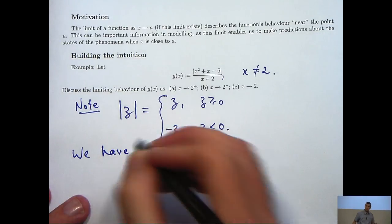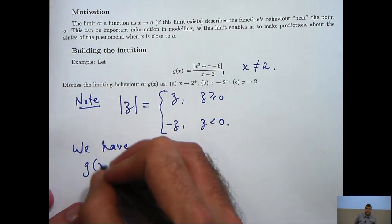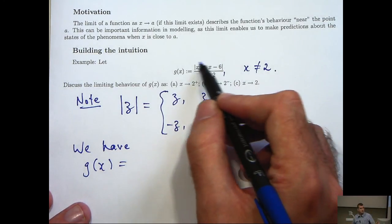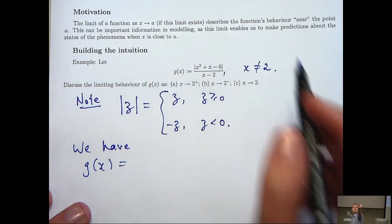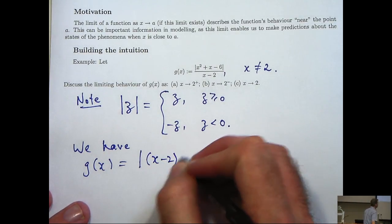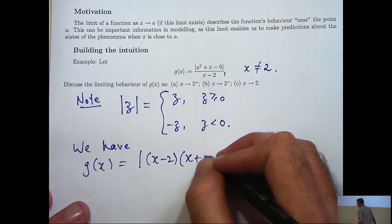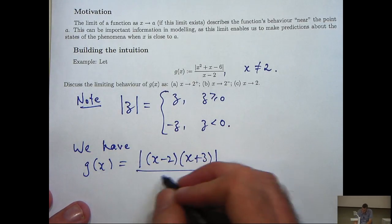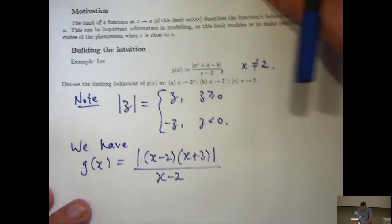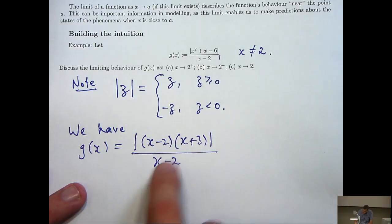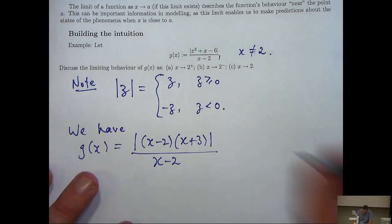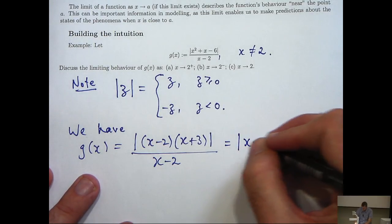Okay, so let's consider g. Now the first thing I notice, I can actually factorize the expression inside the absolute value sign and I can factorize it in the following way. Now I recognize that I have an x minus 2 up here and x minus 2 down the bottom. Well, maybe they'll cancel at some point. So what I'm going to do is further simplify.